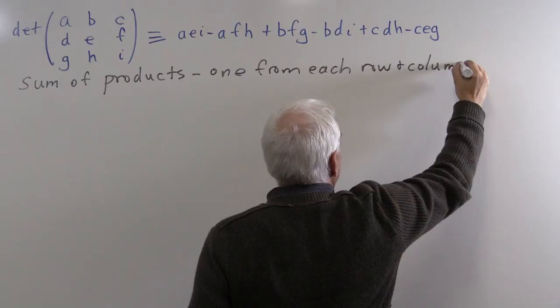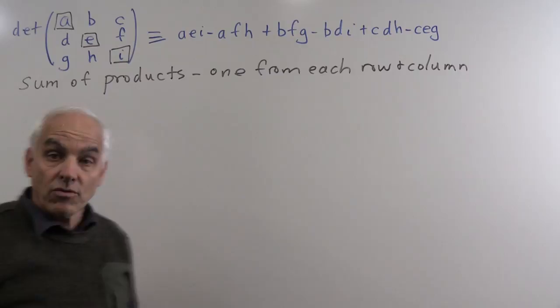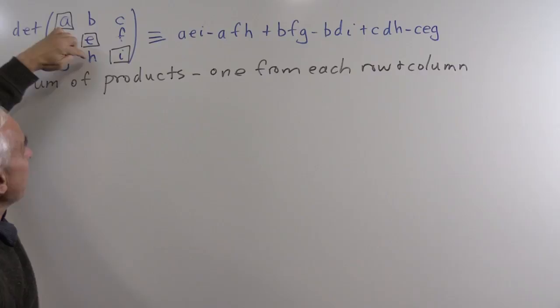For example, the first product is A times E times I — we take those three entries, one from each row and each column. The others are all of the same kind: A·F·H, B·F·G, B·D·I, C·D·H, and C·E·G. These six terms correspond to the six possible ways of placing three rooks on a three by three chessboard such that none of the rooks can take each other.